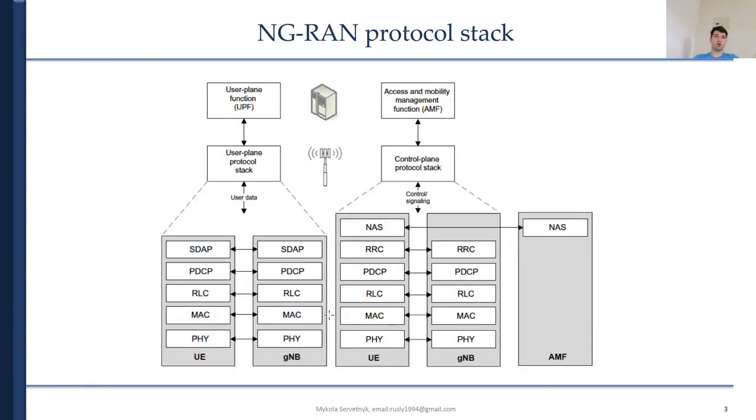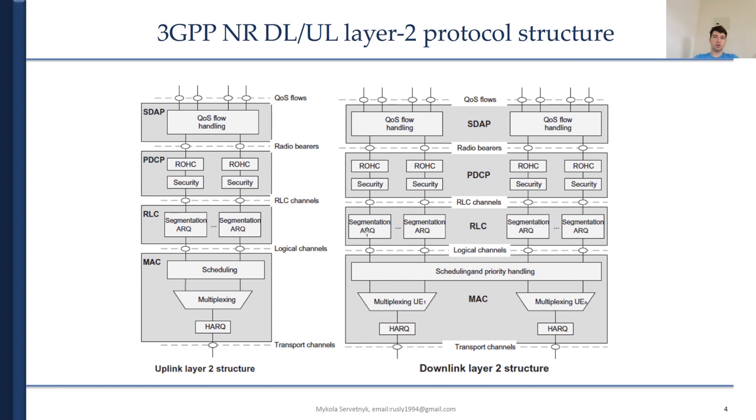The NG-RAN protocol structure is depicted on the figure of this slide. For UEs and gNodeBs in the user plane and control plane, the NAS functional block is used for network attachment, authentication, setup of bearers, and mobility management. All NAS messages are ciphered—meaning encrypted—and integrity protected by the AMF and also the user itself. There is also a mechanism for transparent transfer of NAS messages.